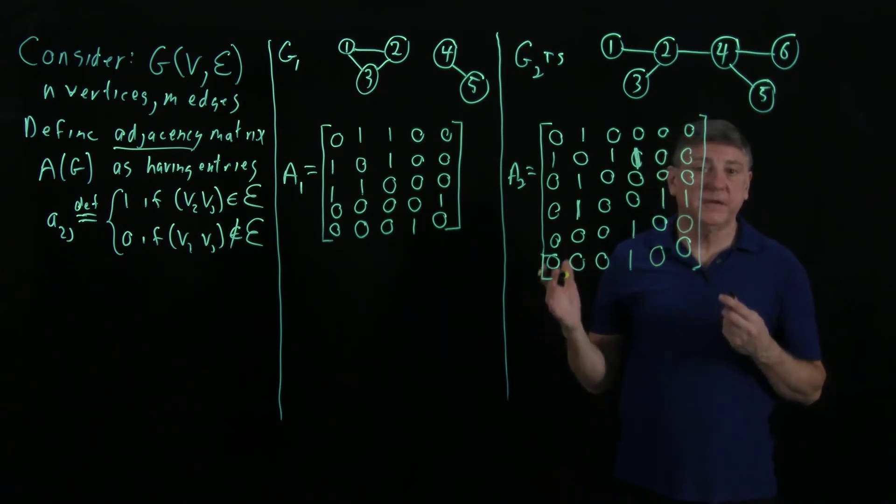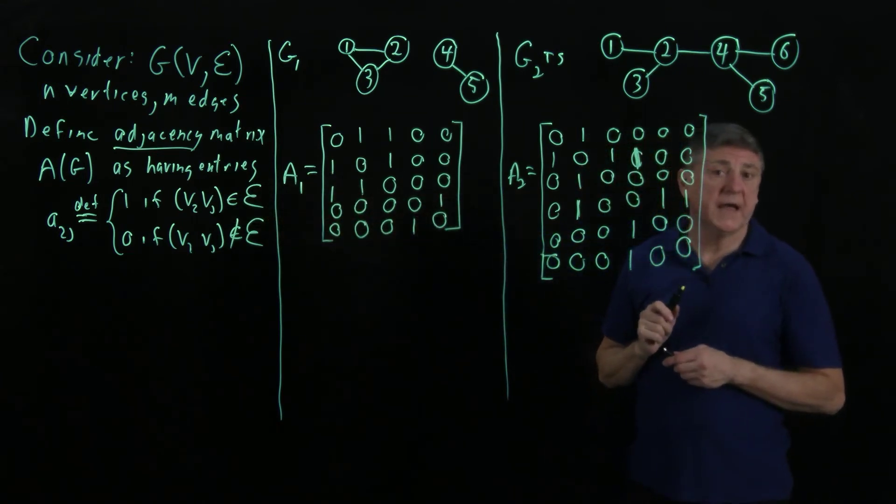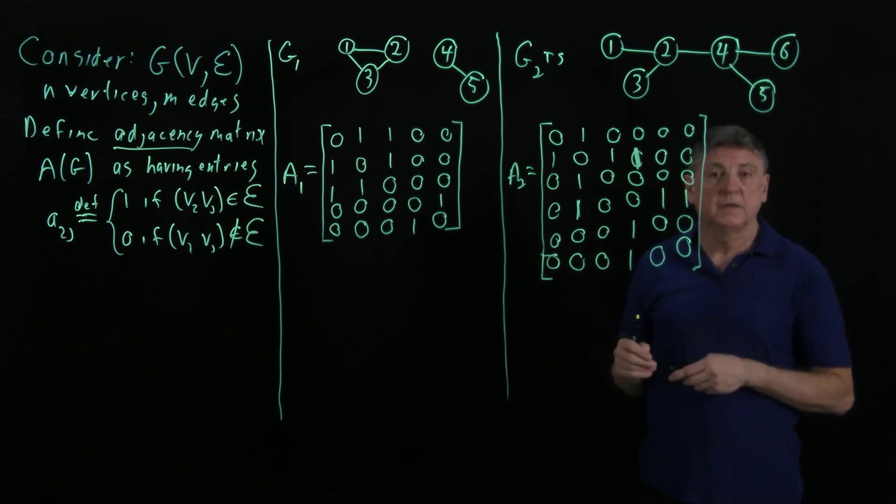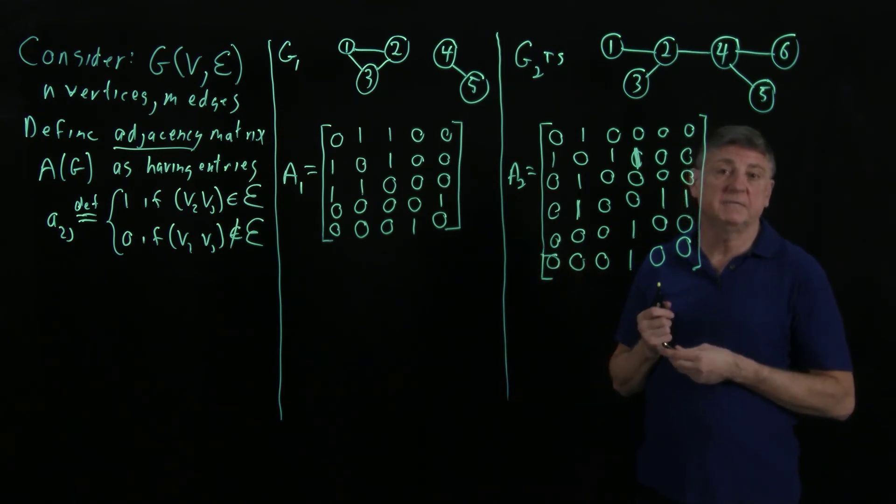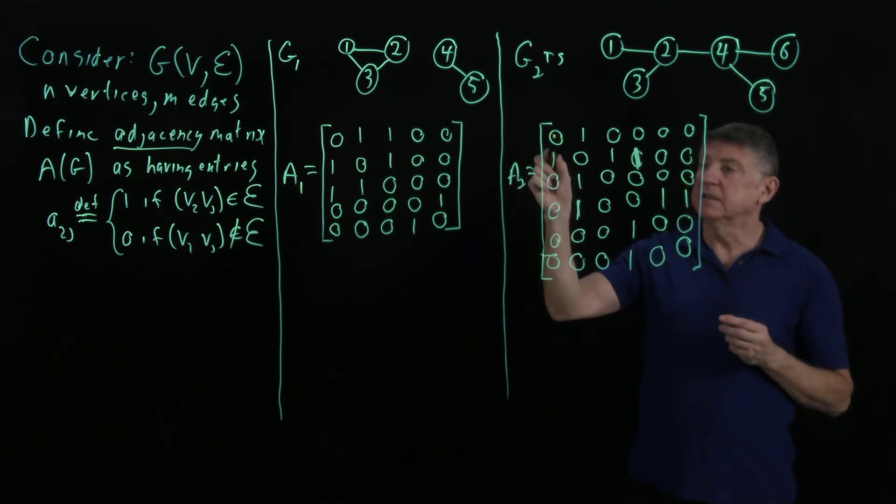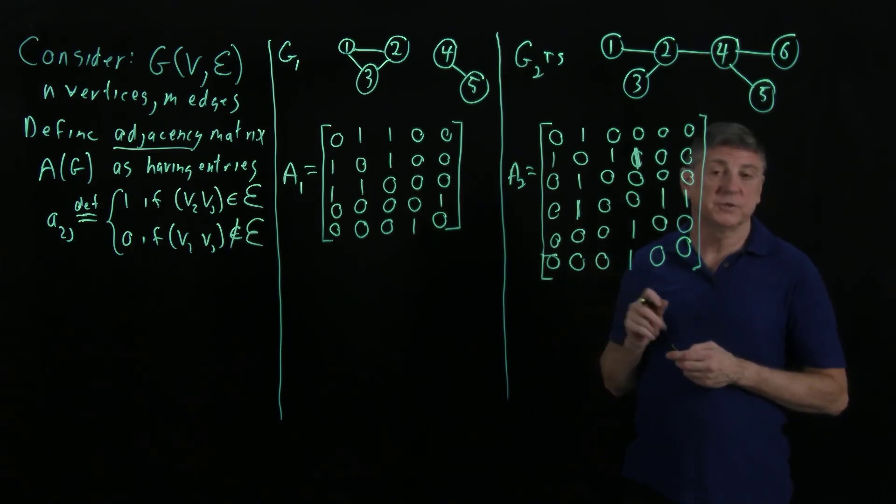Now, what we'll observe here is that in general, from this definition, what we're going to have are some important properties. One is this matrix is always real. The other is that it's always symmetric. And the third is that it always has a zero diagonal. And if we now recall some of the basic properties of matrices from prerequisite courses, if a matrix is real and symmetric, then that means that all of its eigenvalues are real. And because the diagonal, the sum of the diagonal, is the sum of the eigenvalues, that means that the eigenvalues also sum to zero.